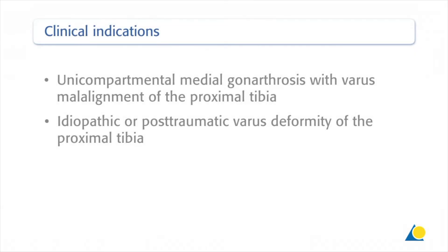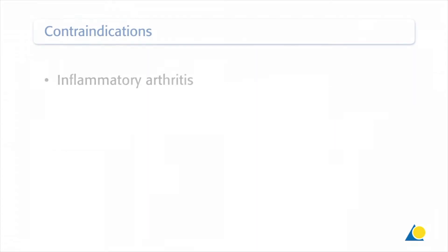An open wedge osteotomy of the medial proximal tibia is indicated for unicompartmental medial gonarthrosis with varus malalignment of the proximal tibia, and idiopathic or post-traumatic varus deformity of the proximal tibia. Contraindications include inflammatory arthritis.